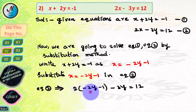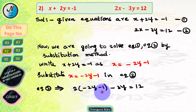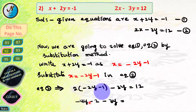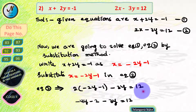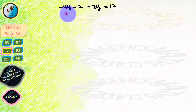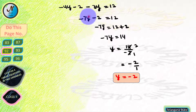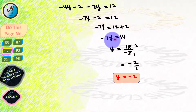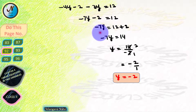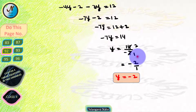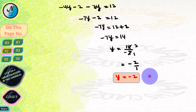Equation 2 becomes: 2 into (minus 2y minus 1) minus 3y equals 12. By distributive law, 2 into minus 2y equals minus 4y and 2 into minus 1 equals minus 2, giving minus 4y minus 2 minus 3y equals 12. Since minus 4y and minus 3y are similar terms with the same sign, we add to get minus 7y. Transposing minus 2 to the RHS: minus 7y equals 12 plus 2 equals 14, so y equals 14 by minus 7, giving y equals minus 2.